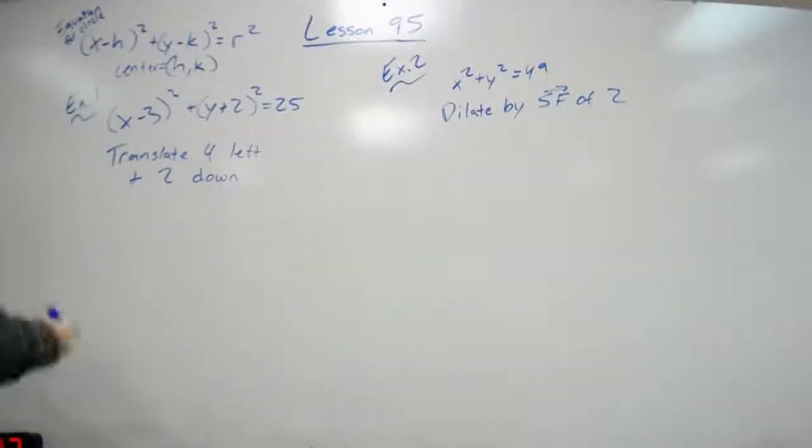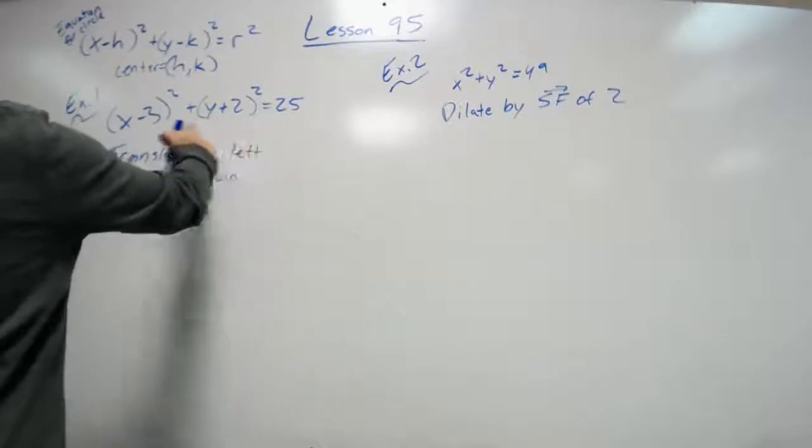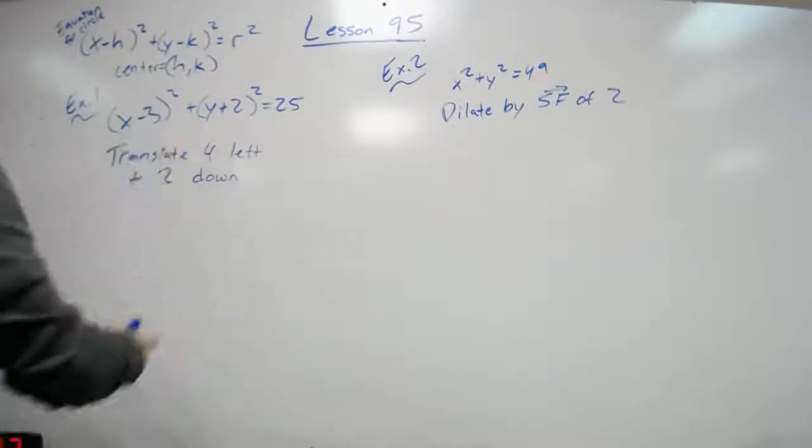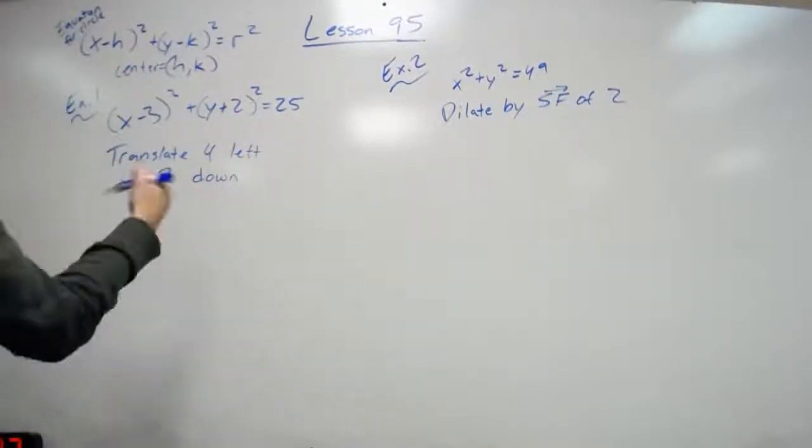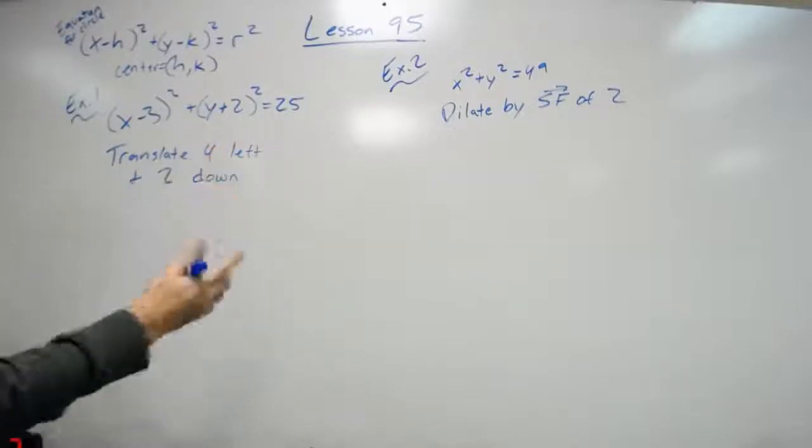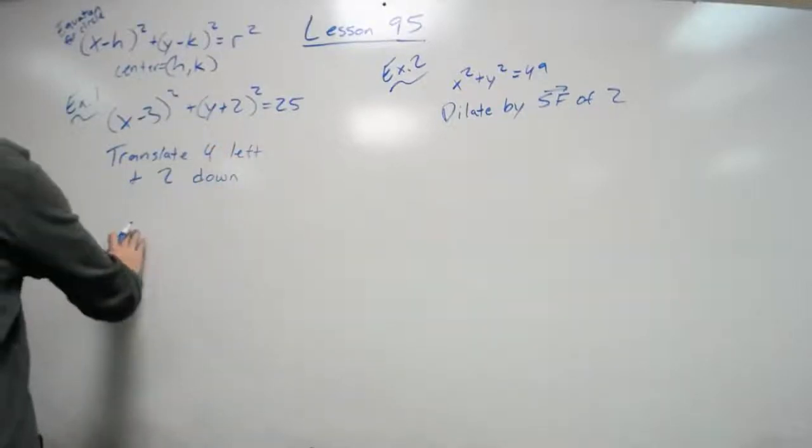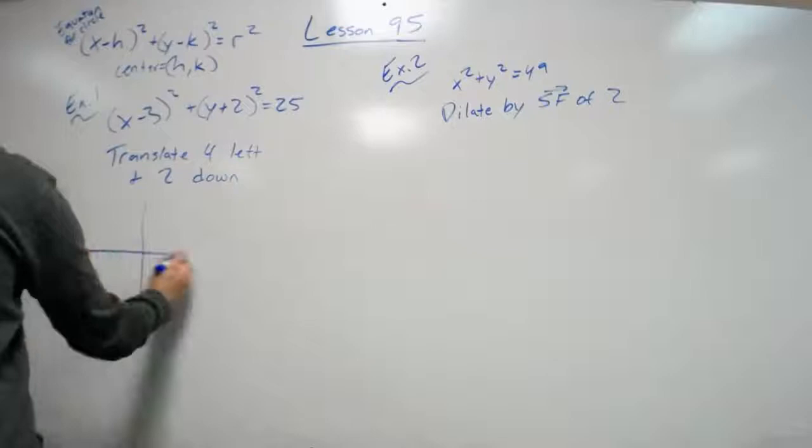So in example one, it gives us a circle with this equation, and it wants us to translate it four to the left and two down. So how are we going to do that? Well, I'm going to help by kind of trying to draw this first.